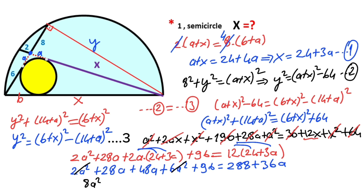After substituting x equals 24 plus 3a and simplifying, we get 8a squared plus 40a minus 192 equals zero.